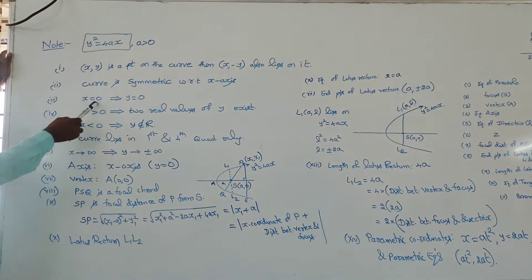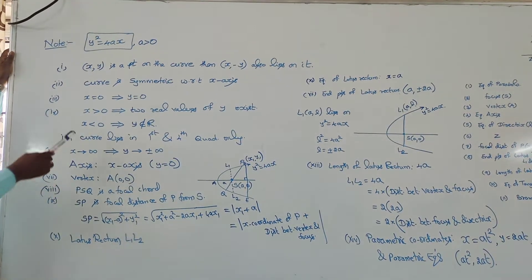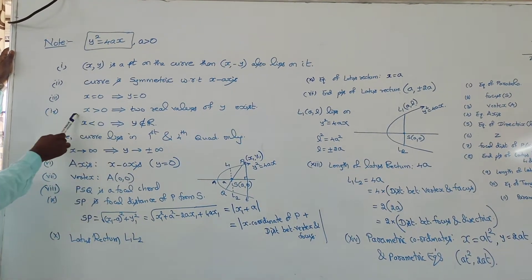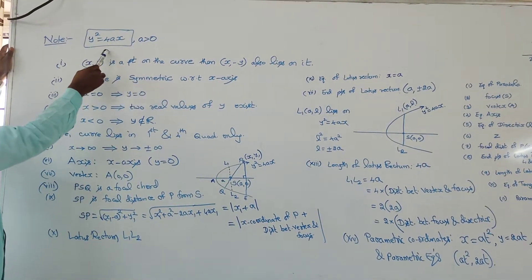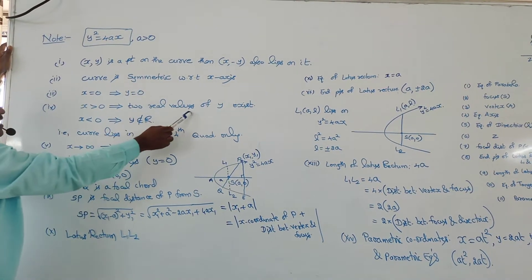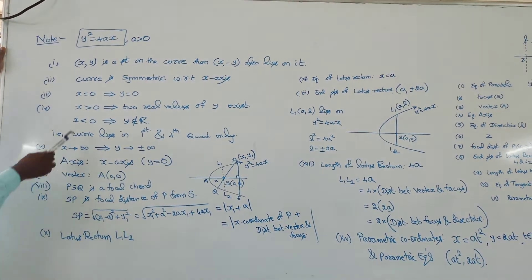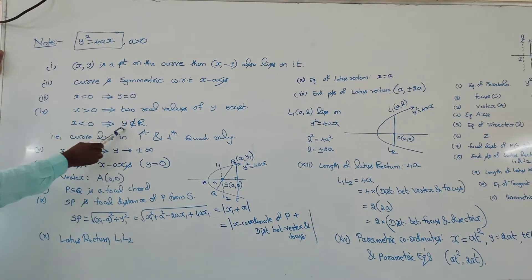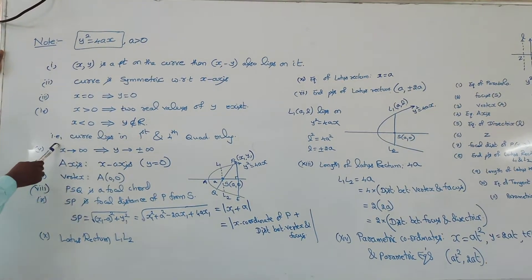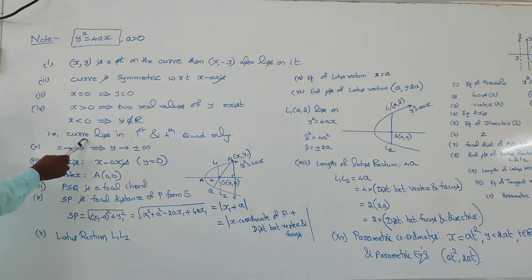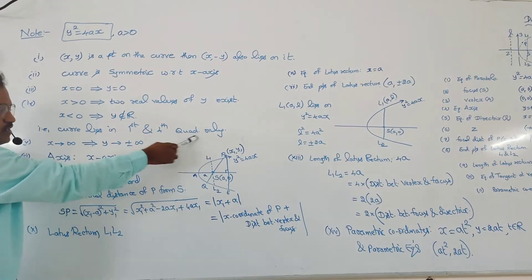When x is 0, y is also 0. When x is greater than 0, because the right side is positive, you will get two real values of y. When x is less than 0, y does not belong to ℝ. That is, the curve lies in the first and fourth quadrants only.